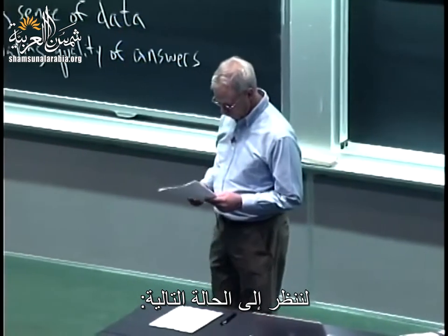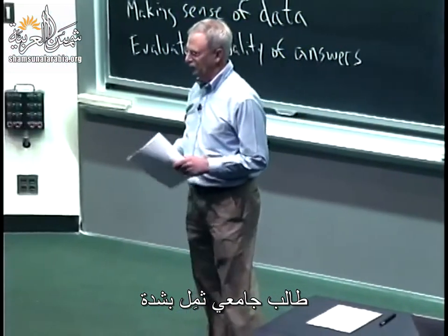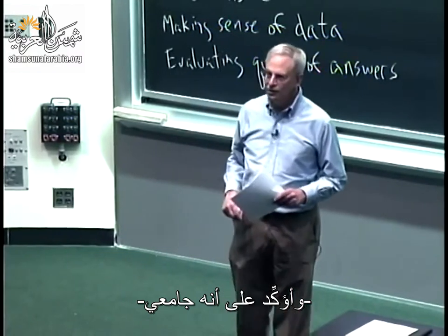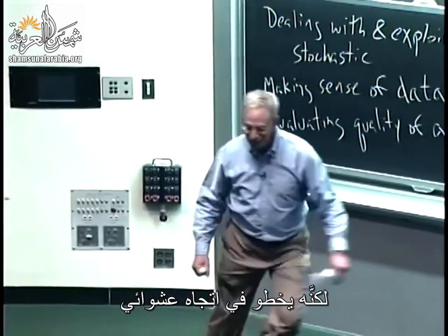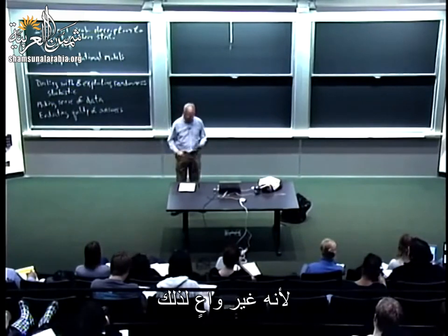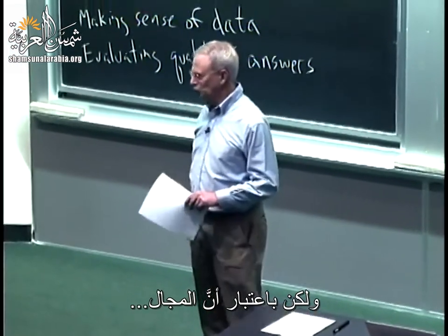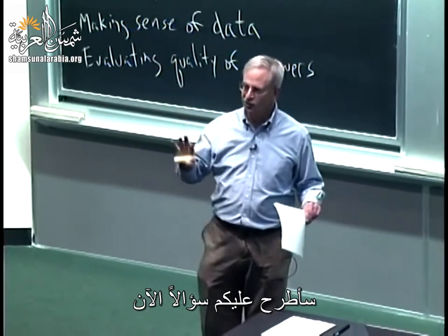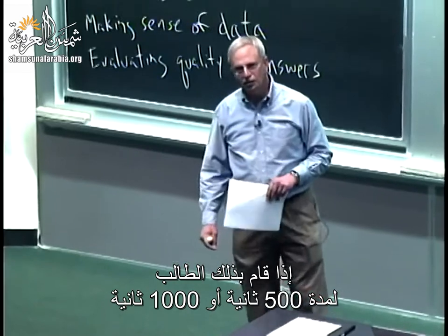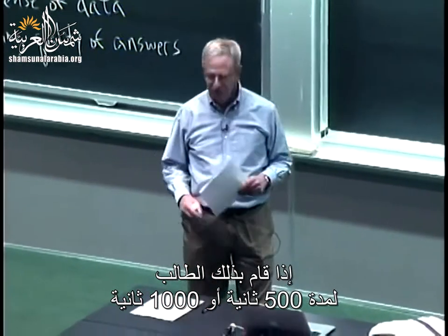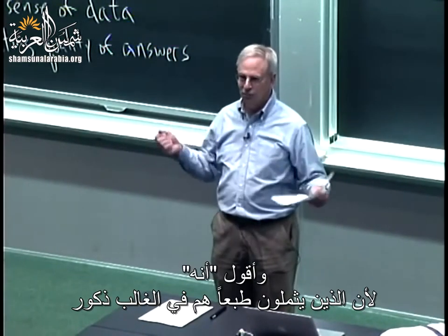Consider the following situation: a seriously drunken university student — and I emphasize university as opposed to institute here — is standing in the middle of a field. Every second, he takes a step in some direction or another, pretty randomly because he's really out of it. If the student did this for 500 seconds or 1,000 seconds, how far do you expect the student would be from where he started?